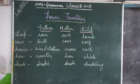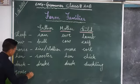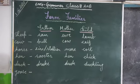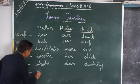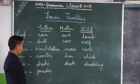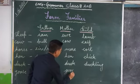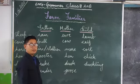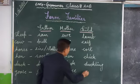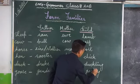Next farm animal is goose. We also keep goose at home. The father is called gander. The mother is called goose. And the child is called gosling. These are there in your book.